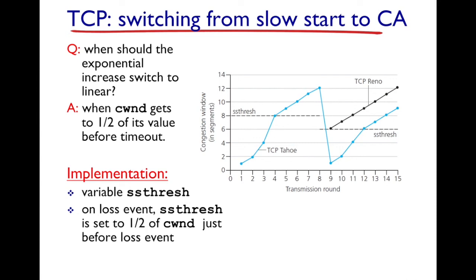Now let's look at TCP Reno. There are hundreds of versions of TCP, but we study these two. TCP Reno reacts differently to loss: if the loss is due to a timeout it behaves exactly like Tahoe and drops the window size to 1. However if the loss is due to three duplicate acknowledgements it does not react as aggressively — instead it drops the window size to SSThresh and increases linearly from there, as shown by the black line. With this I'll complete my discussion on the congestion control aspect of TCP. Thank you for watching.